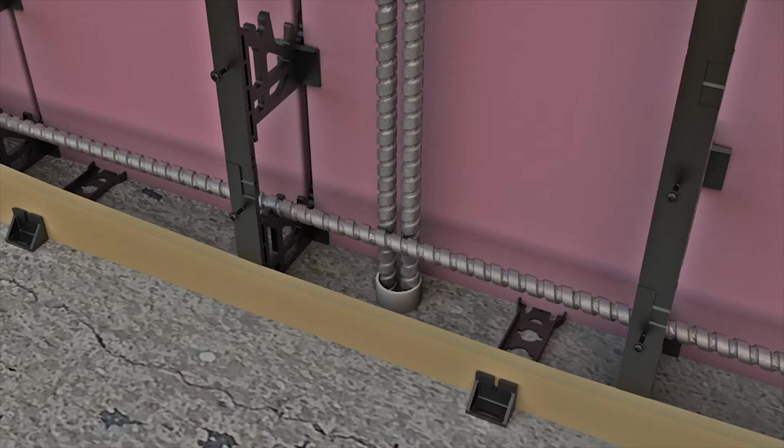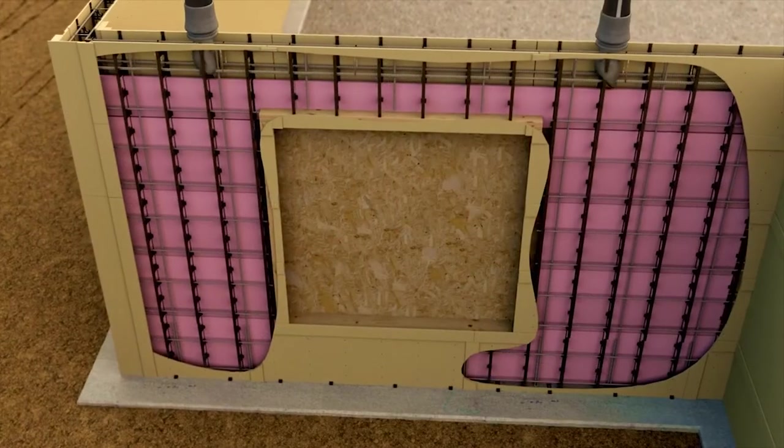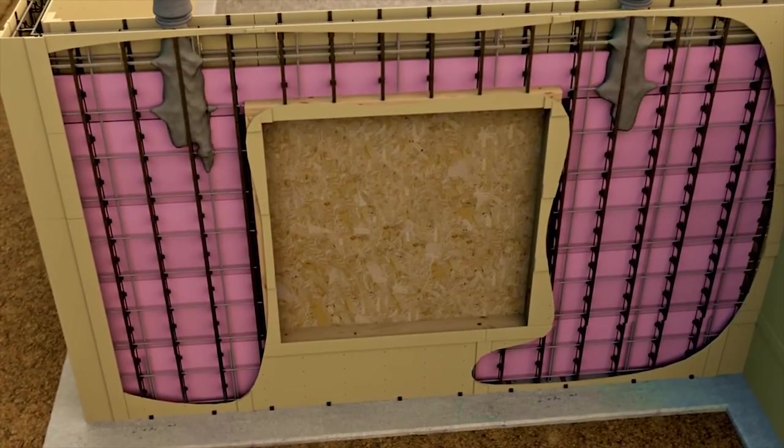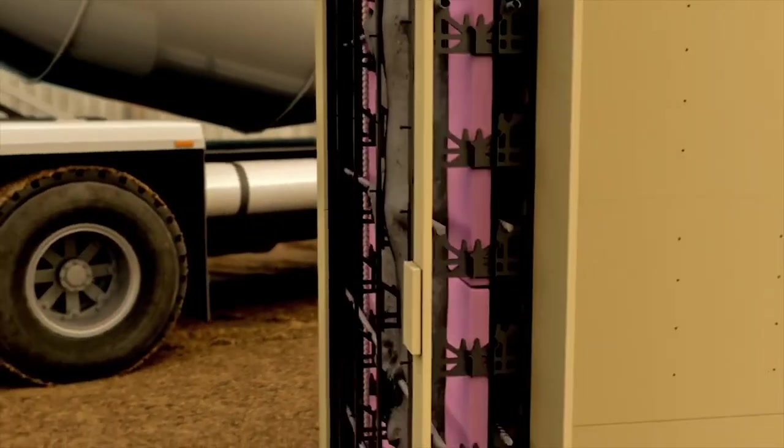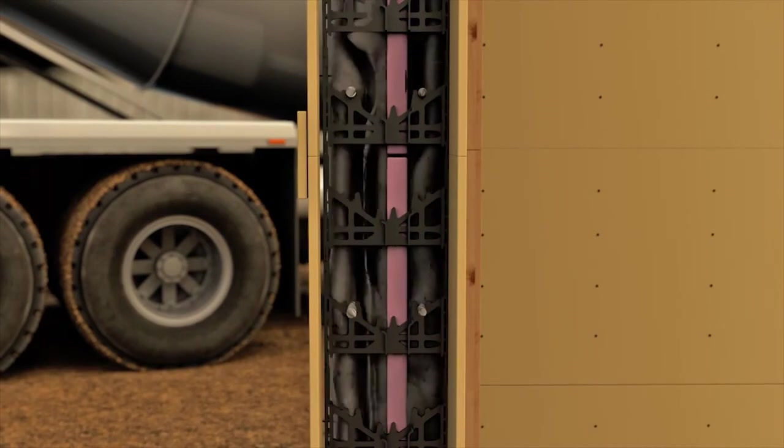This holds all the rebar in place so there's no movement during the pouring process. The tabs on the spider ties help hold the styrofoam board in place during the pouring process. But you will want to keep in mind that as you fill the wall, you'll want to fill the inside and the outside evenly.